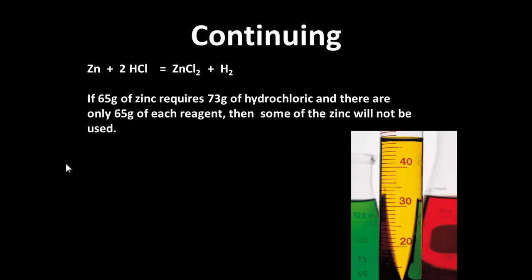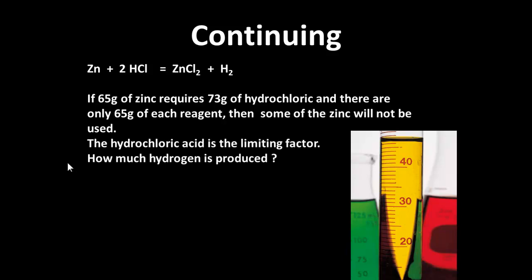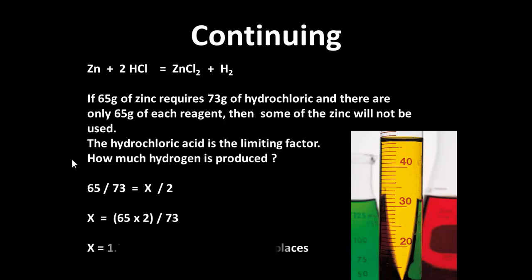Let's determine which reactant is going to be left over. If 65 grams of zinc normally requires 73 grams of hydrochloric acid, but we've only got 65 grams of hydrochloric acid, then we're going to have some zinc left over — some of the zinc won't be used. So the hydrochloric acid is the limiting factor. Now, we know that 65 over 73 equals x over 2. Solving for x, we get 1.78, or approximately 1.8 grams of hydrogen.